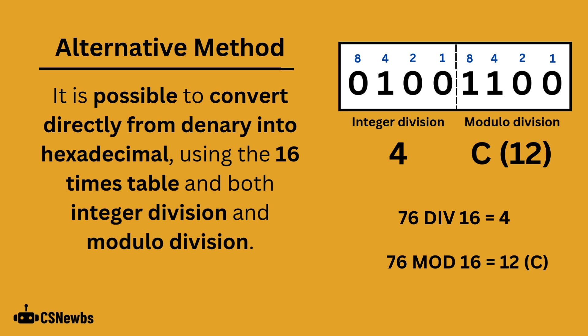To work out the right nibble, you would need to do the denary number, 76, and then modulo division 16. 16 goes into 76 4 times. 16, 32, 48 and 64. Modulo division works out the remainder from that 64 to the original value of 76, which is a remainder of 12. 12 in hexadecimal is C.